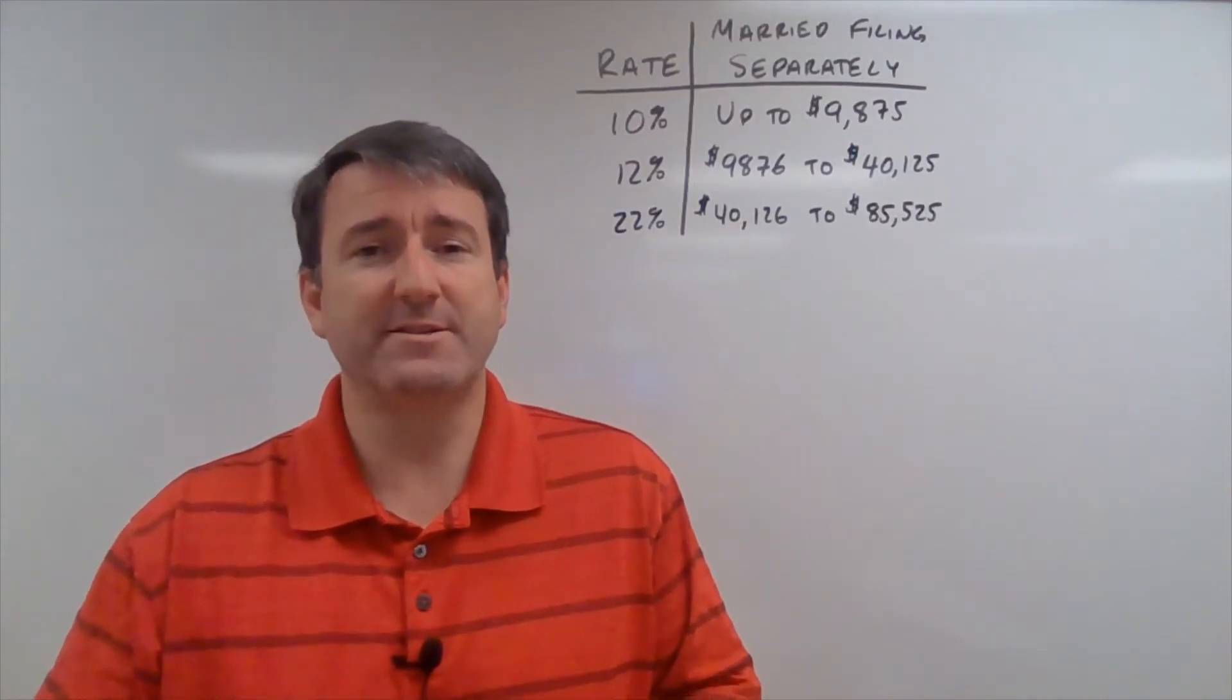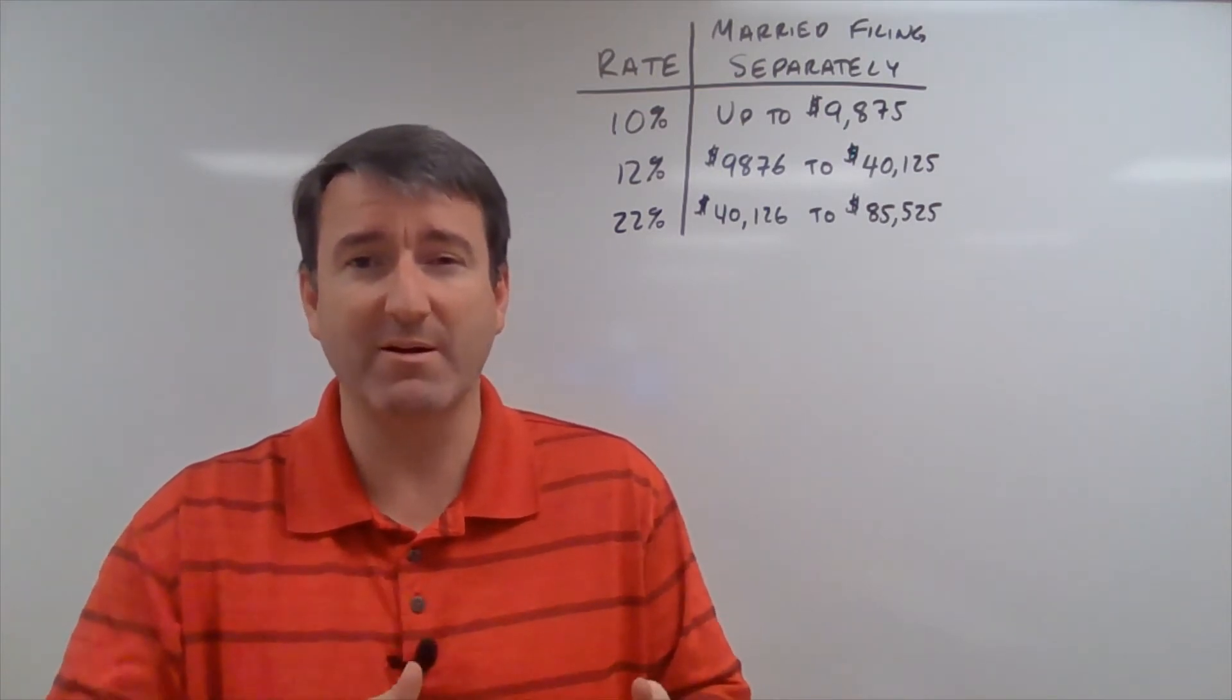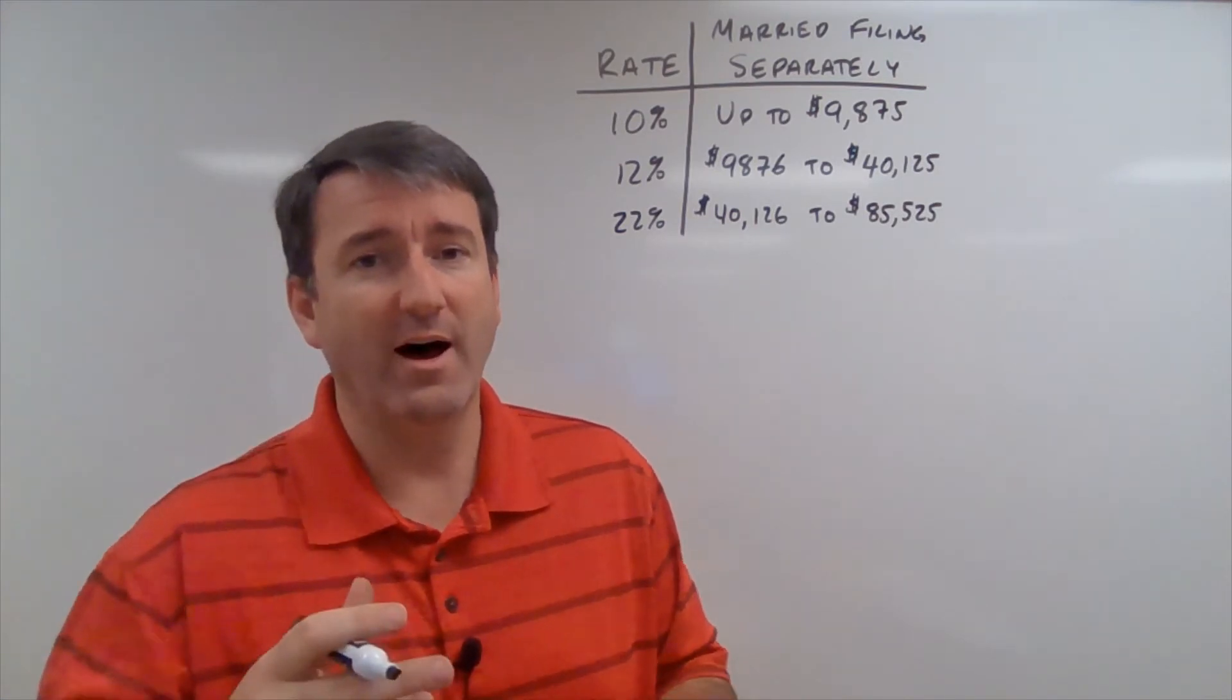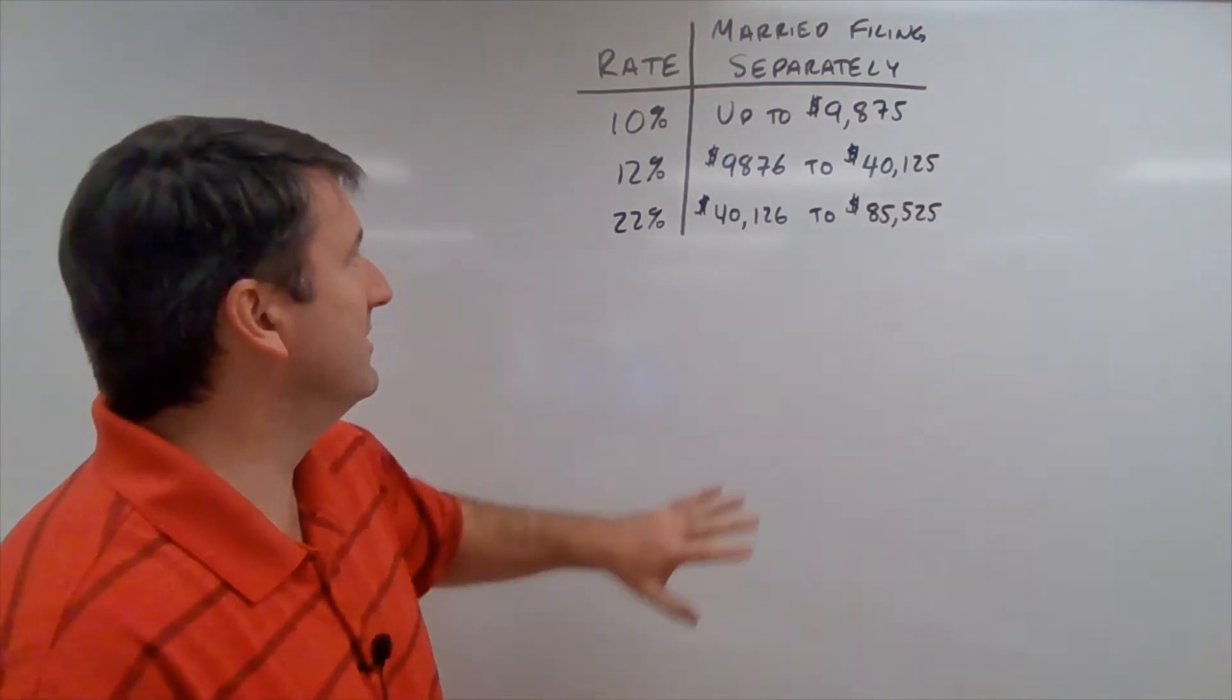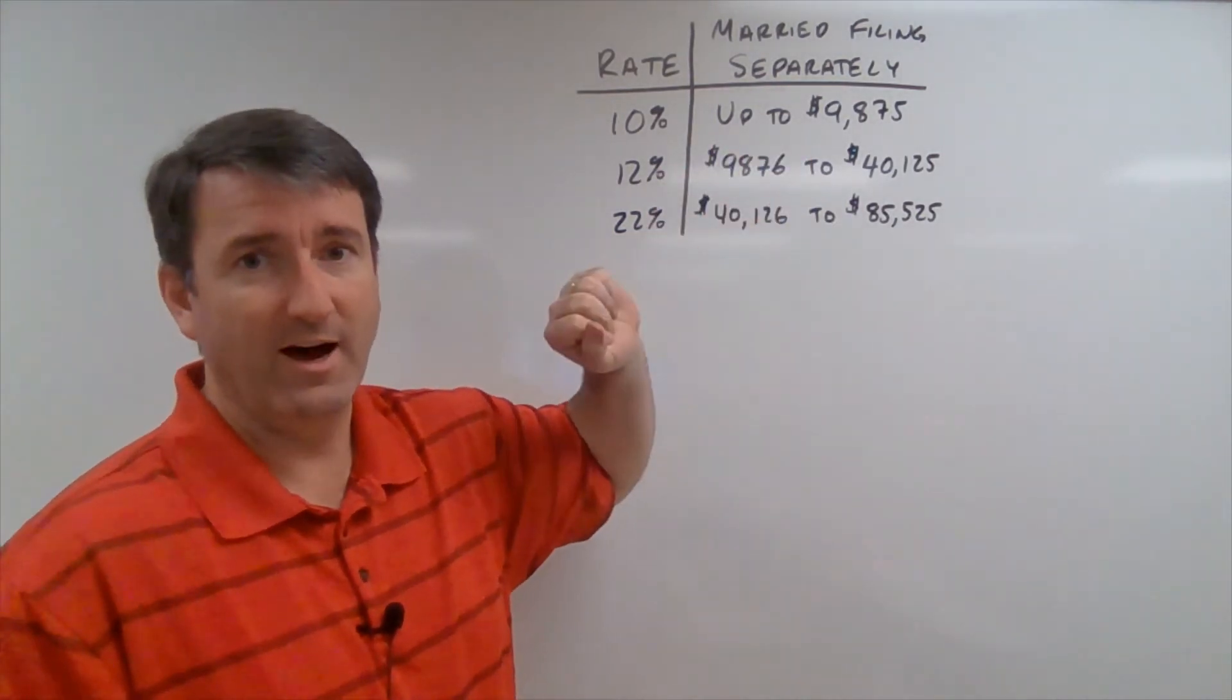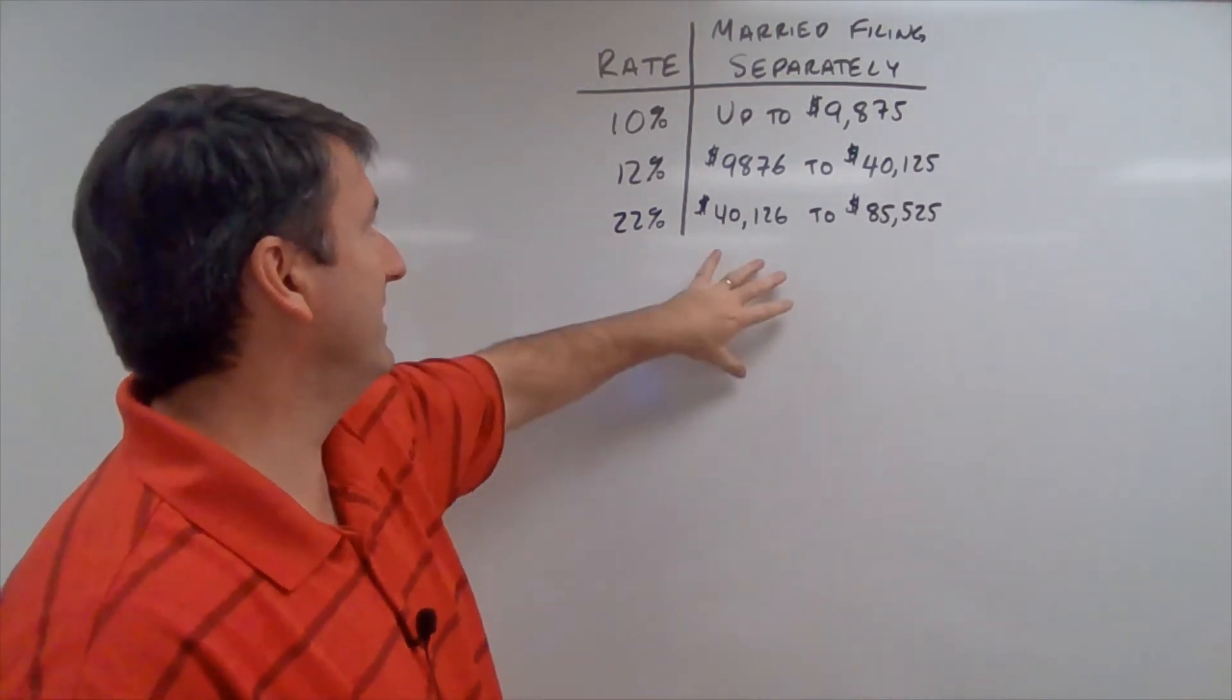Our example asks us to calculate the tax owed by Jessica, who is married but filing separately, and had taxable income in the year 2020 of $82,500. So you can see I've reproduced the relevant sections of the table of marginal tax rates up here on the board.